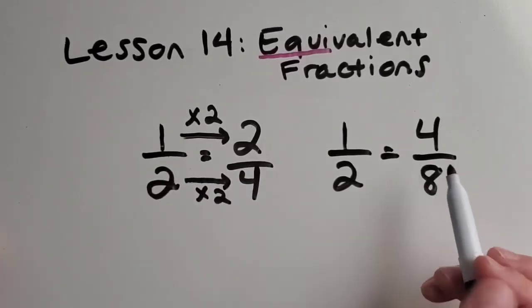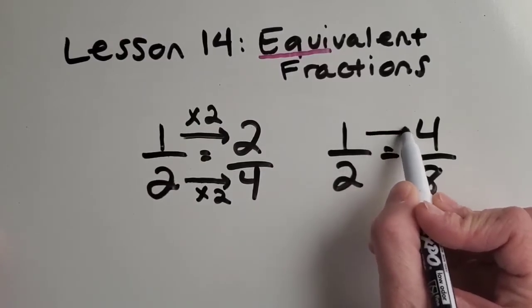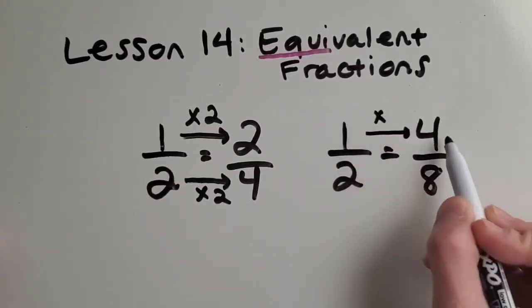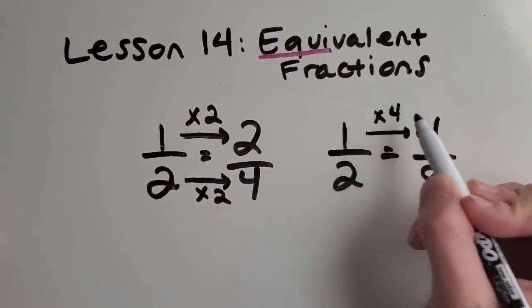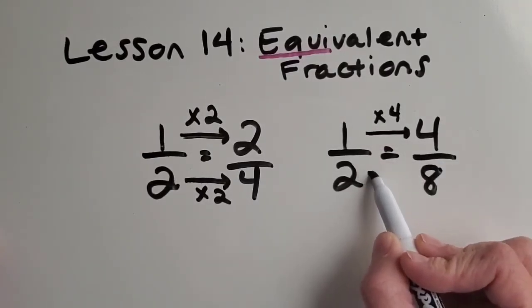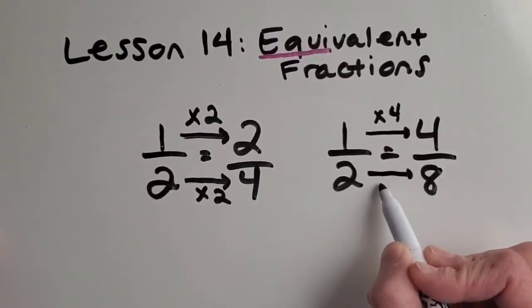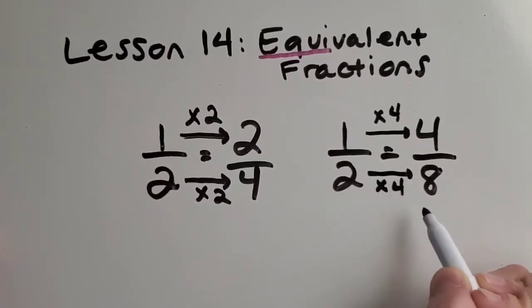Let's try it with this one. One times what equals four? Oh, good, times four. Let's test it out on the denominator. Let's see if this really works every time. What is two times four? Eight. Yay.